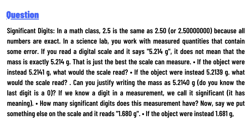If we know a digit in a measurement, we call it significant — it has meaning. How many significant digits does this measurement have? Now say we put something else on the scale and it reads 1.680 g.